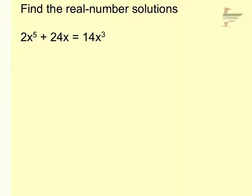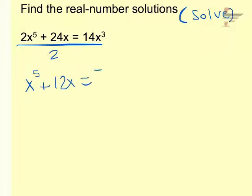Okay, so find the real number solutions. In other words, we want to solve this. Make sure you understand those directions. So first and foremost, I can divide everything by 2. So I'll have x to the 5th plus 12x equals 7x cubed. And then I'm going to get everything to one side. So I will have x to the 5th minus 7x cubed plus 12x equals 0.